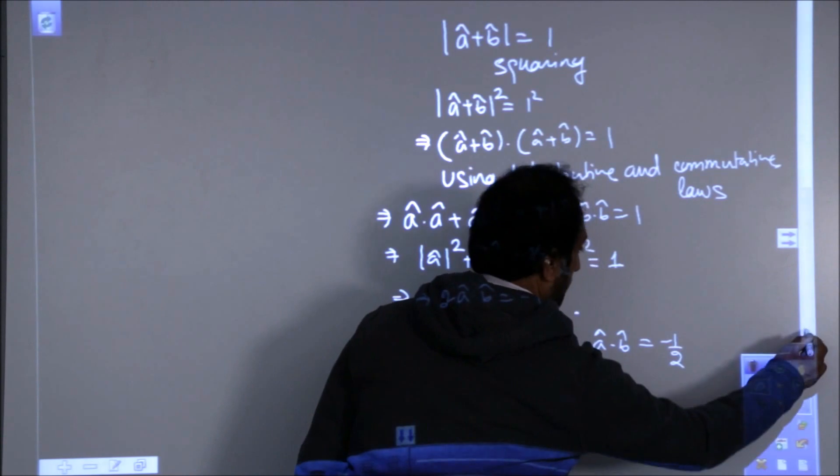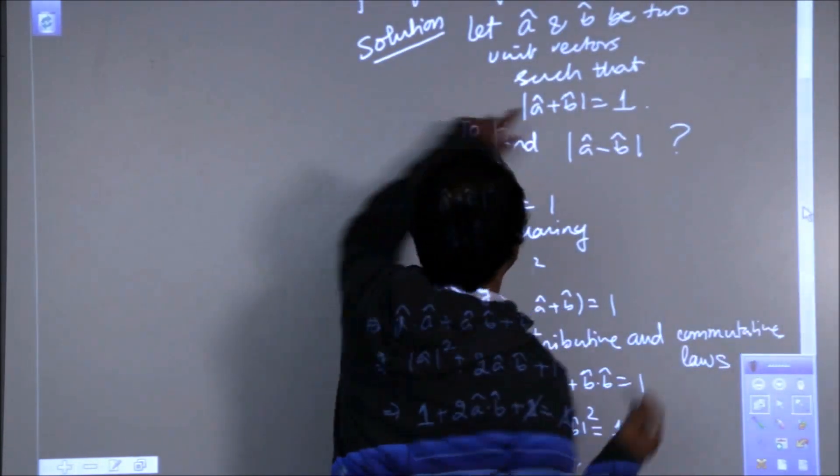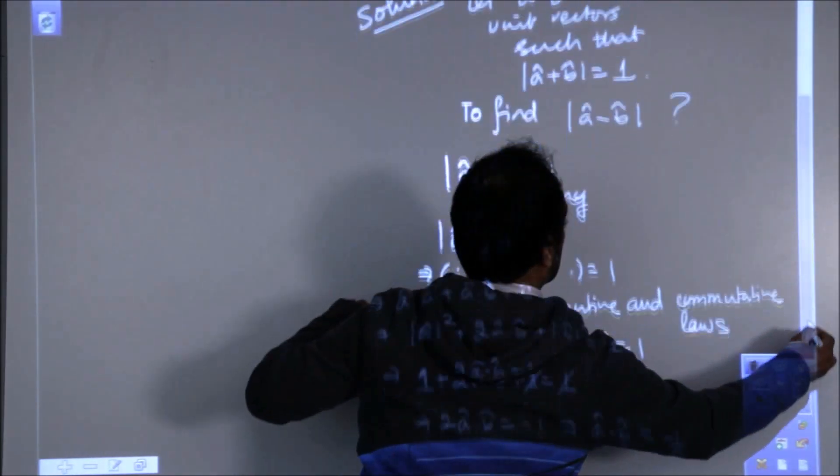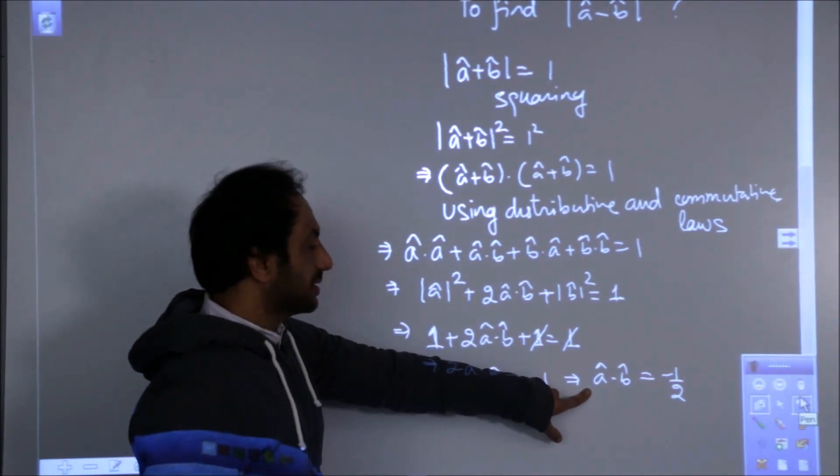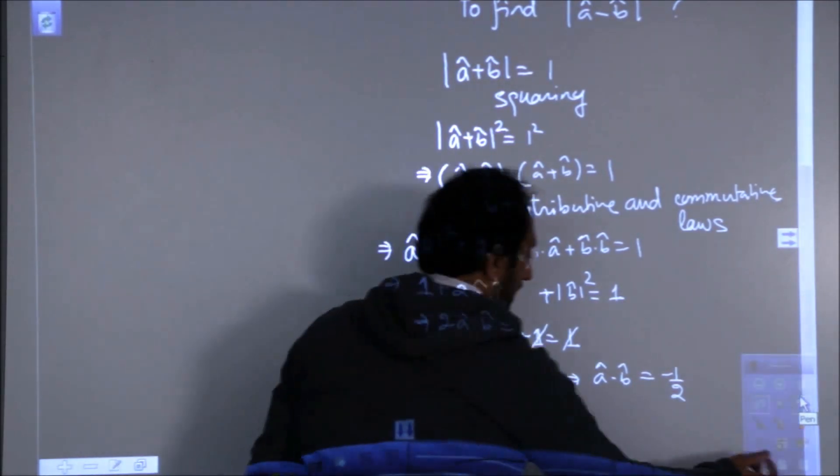Now, just see, we are given that this is equal to 1, we did squaring and we got the logic that a dot b is minus 1 by 2.